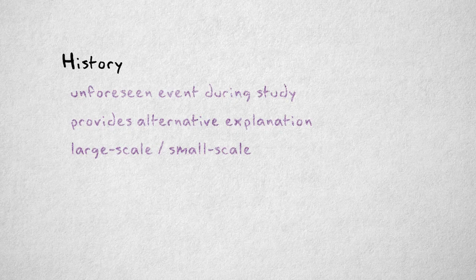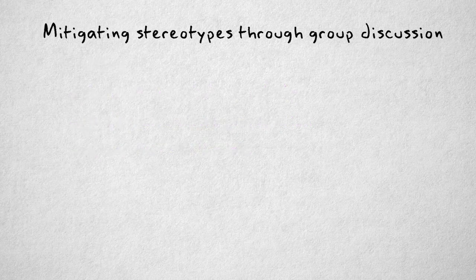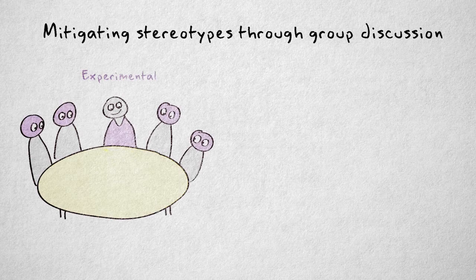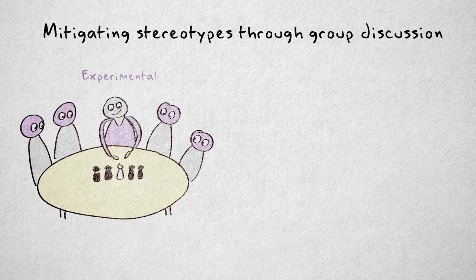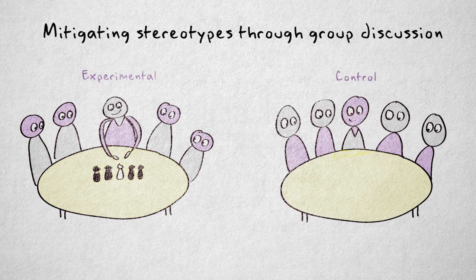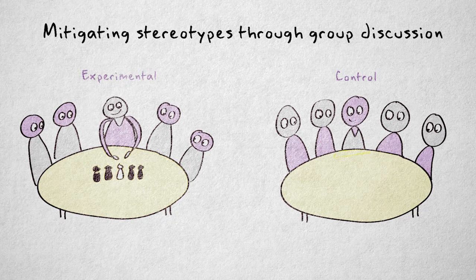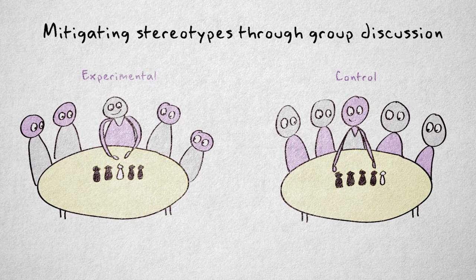Consider a study on mitigating negative stereotypes about a minority group. The manipulation consists of a group discussion led by an experimenter. The experimenter focuses on the point of view of the minority group, asking participants to put themselves in their shoes. In the control condition, the experimenter focuses on differences between the majority and minority, and stresses the point of view of the majority.